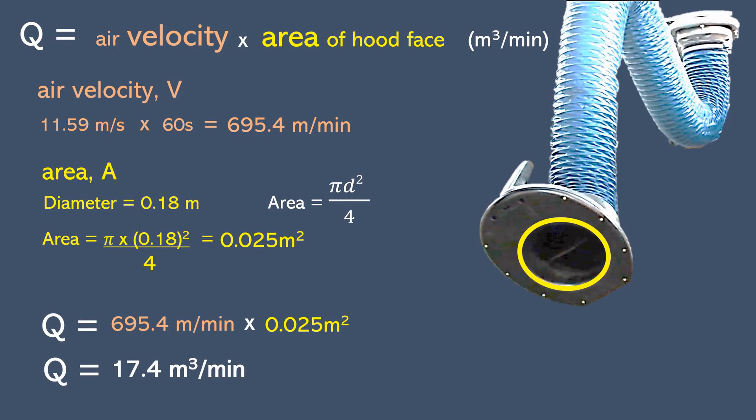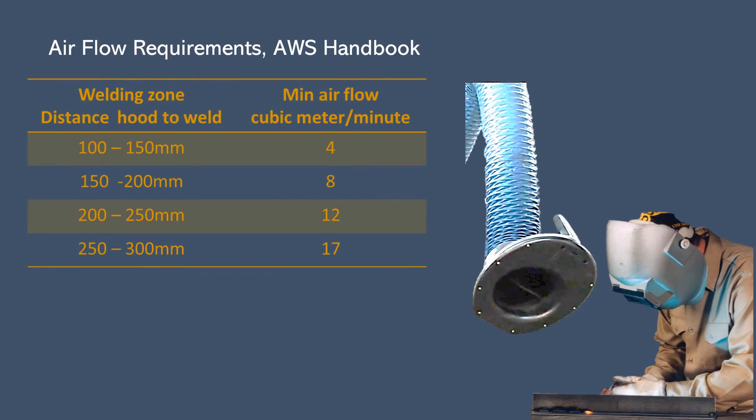Now that is how much air that goes into the LEV, aka the performance of the LEV itself. Now that we got the airflow, we can compare it to the airflow requirement from the AWS Handbook. Our LEV airflow is 17.4 cubic meter per minute. Thus, the suitable distance from the hood to the weld area is between 250 to 300 millimeters or about 1 foot.